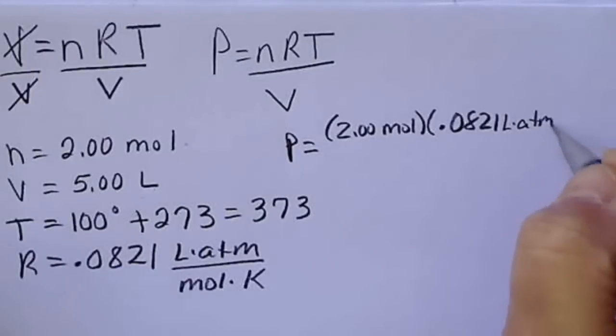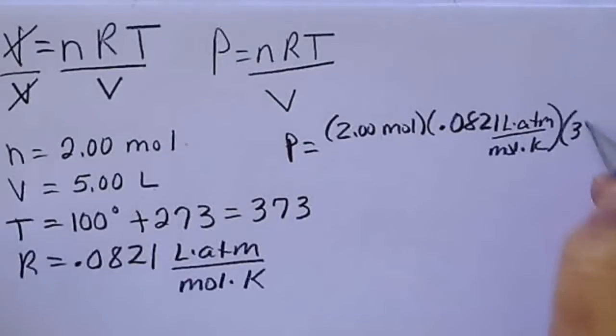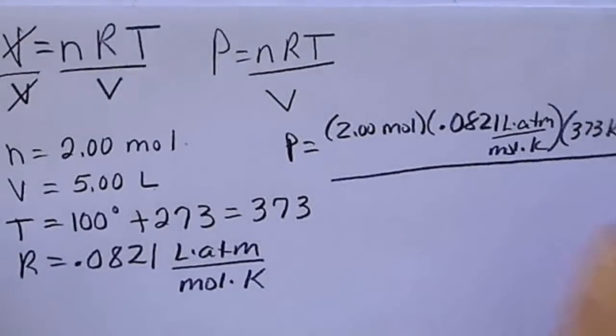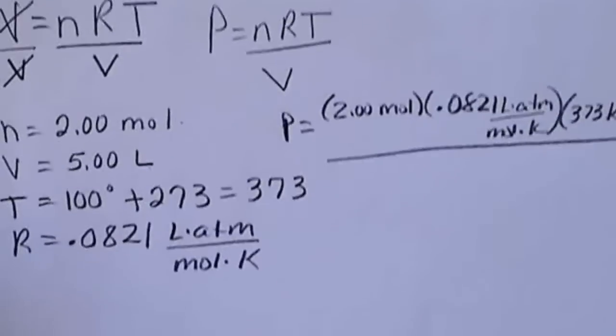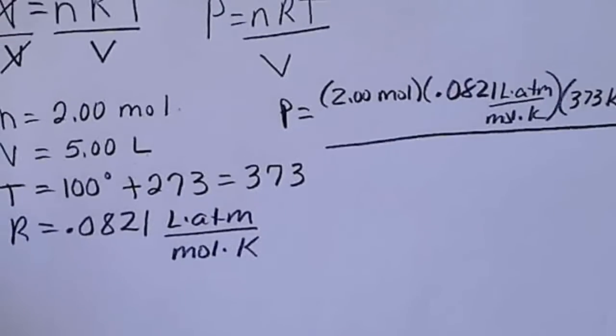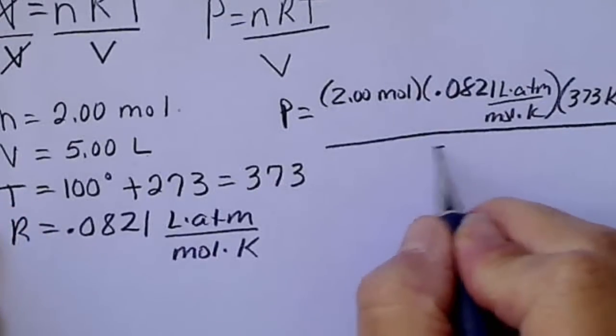Liter atmospheres per mole per degree Kelvin times the temperature, 373 degrees Kelvin. And we're going to divide by the volume. So we're going to divide by V, which is 5 liters.